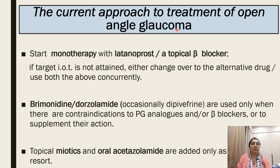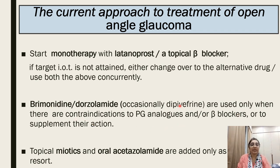The current approach to treatment of open-angle glaucoma: first choice is monotherapy with latanoprost or topical beta blocker like timolol. If the target intraocular tension is not attained, either change to an alternative drug or use both concurrently. Brimonidine or dorzolamide, or occasionally dipivefrin, are used only when there are contraindications to prostaglandin analog or beta blocker, or to supplement their action. Topical miotics or oral acetazolamide are added only as a last resort.